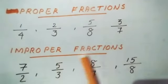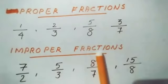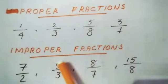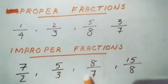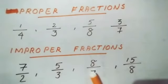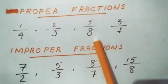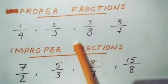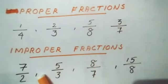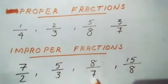The next type is improper fractions. In an improper fraction, the numerator is greater than the denominator — for example, 7/2, 5/3, 8/7, 15/8. The numerator is always greater than the denominator. A proper fraction is always less than 1, but an improper fraction is more than 1 — more than a whole.